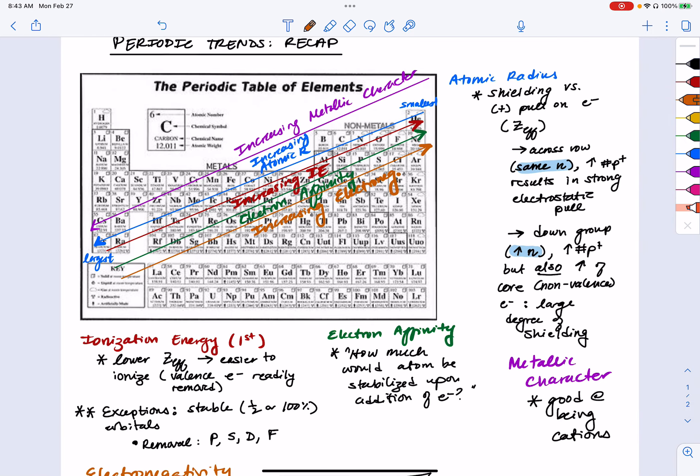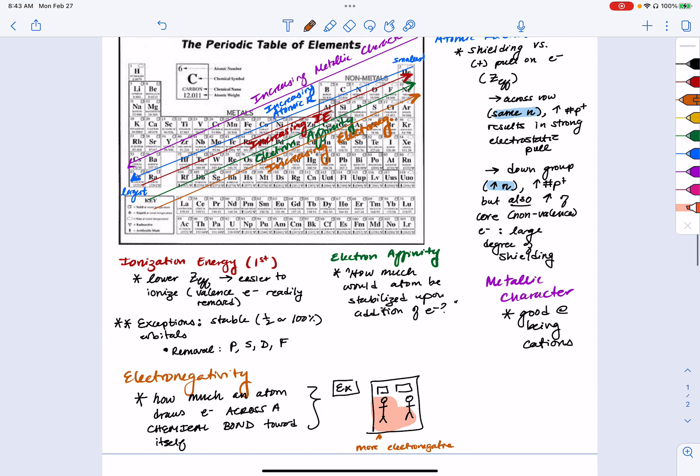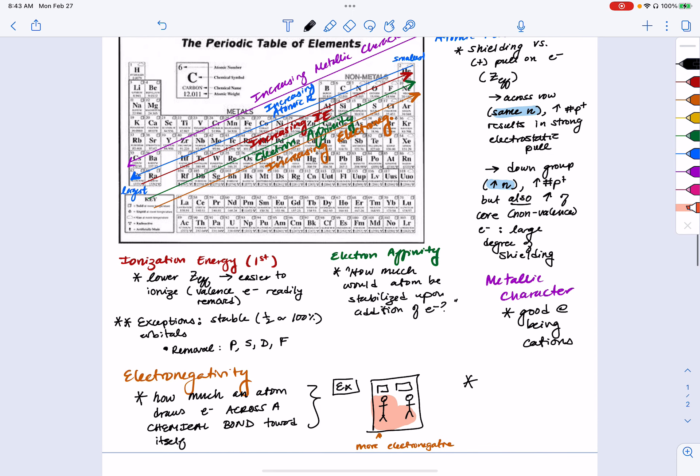Now if you want to, you're welcome to look this up. There's something called the Pauling scale. There's a quantification of the degrees of electronegativity so you could really figure out which element is more electronegative compared to one another.